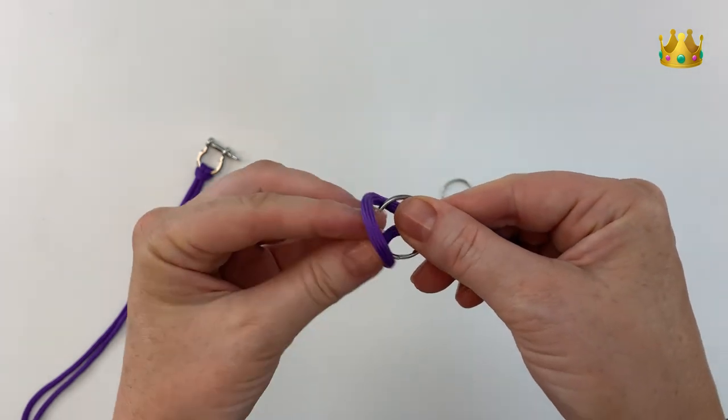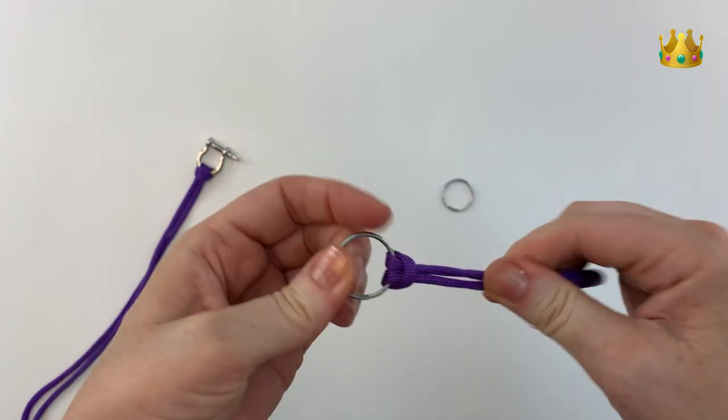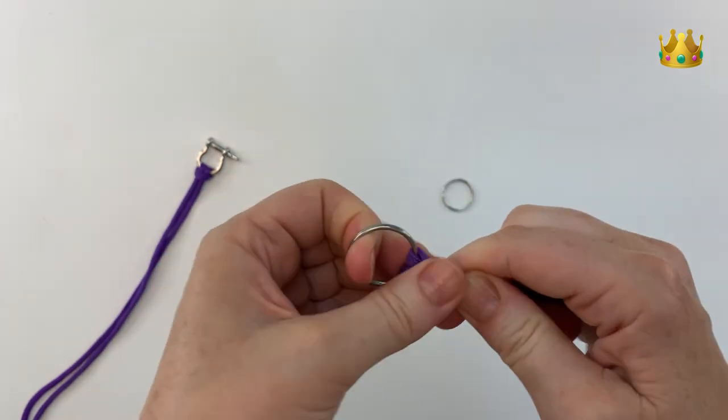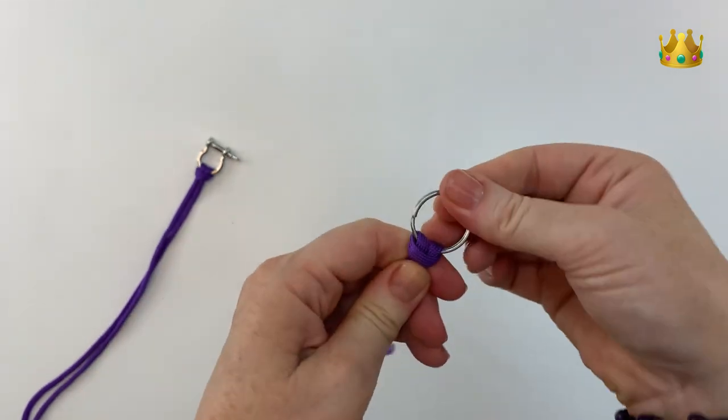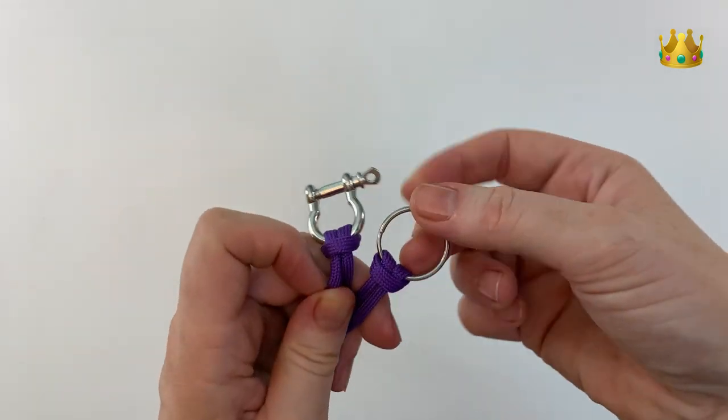Now opening the loop and bringing it around the key ring, pulling it nice and tight against your cording. So there's your secure simple cow hitch knot.